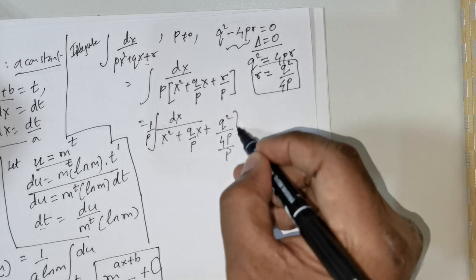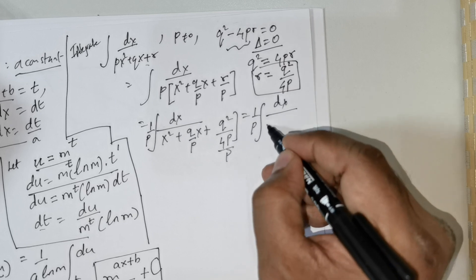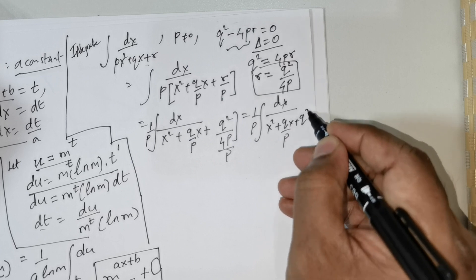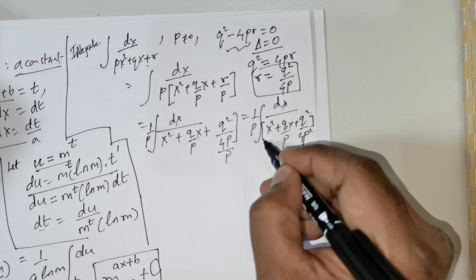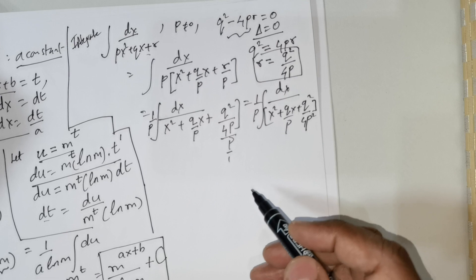This can be further rewritten as 1 over p integral dx over x squared plus q over p times x plus q squared over 4p squared, because if you were to flip it, this is actually p over 1 so it will come to the denominator.